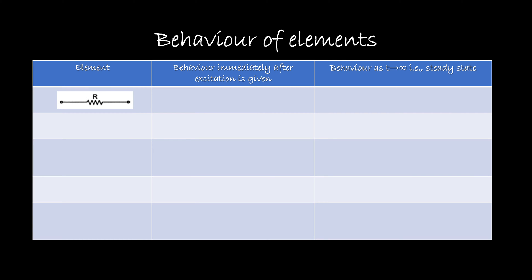Let us start with the first element — the resistor. The resistor does not have any kind of effect over the transient state. Whether it is immediately after the excitation or at the steady state, it will be the same. So there is no need to remember anything special for the resistor.